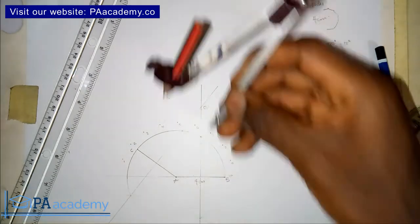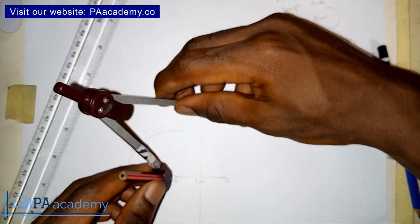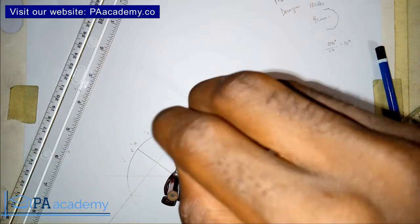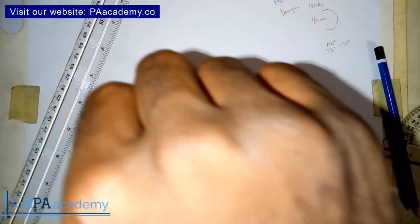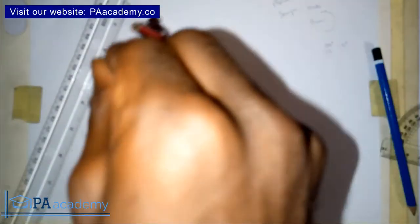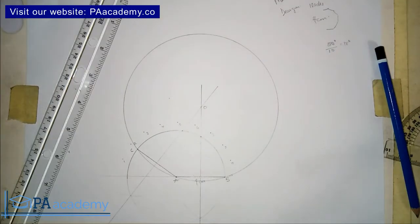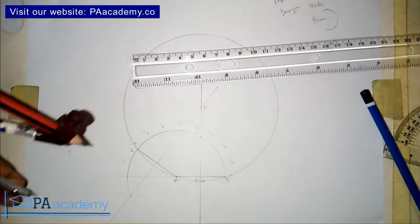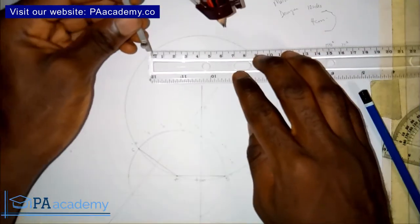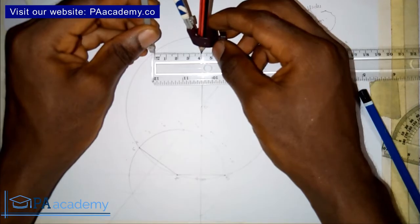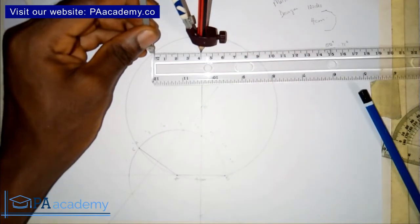Place your compass on point O and adjust it to reach point A. With that radius, draw a full circle. Then bring your compass back and measure the side length of 4 cm again, making sure your measurements are accurate.